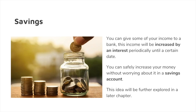Our next alternative source of income is savings, which is actually very interesting. If you give a small amount of your income to a bank, they will increase that income by an interest — a small percentage of your income they will give you on top of it. This is a very safe way to increase your money. The problem is that you cannot touch that money for a few years until the bank says it is appropriate to do so. We'll talk more about savings in the future, but for now you should know that if you put money in a bank, you can increase that money by a certain percentage.